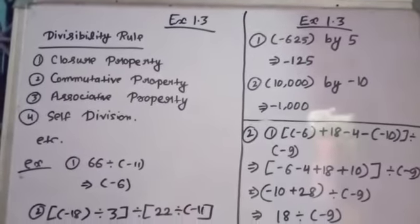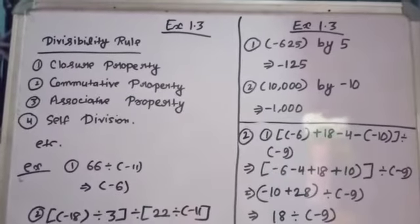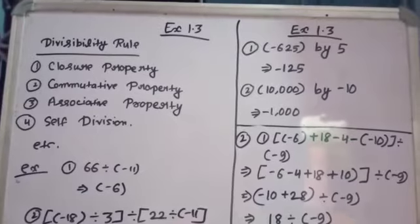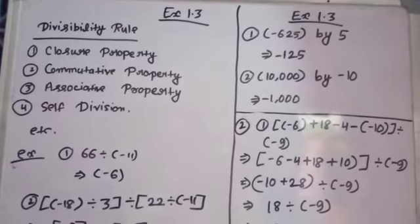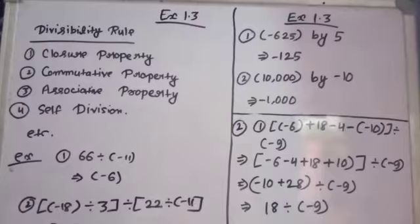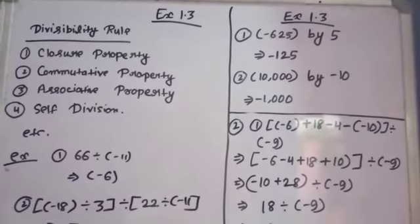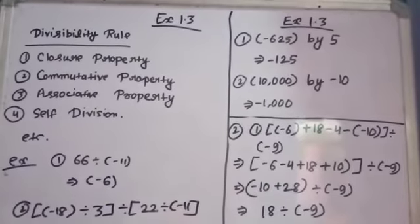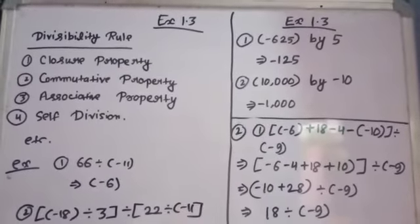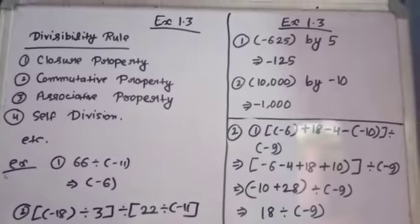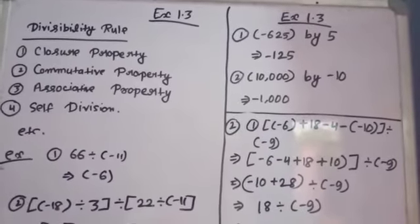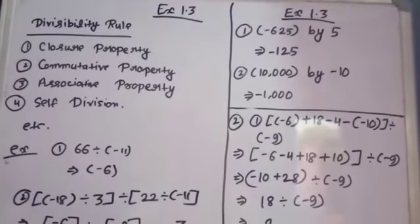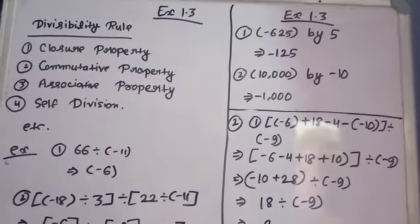Hello students, today I am going to teach you Exercise 1.3 of Class 7, that is divisibility rule. I have told you the rule of addition and multiplication and how to divide that you have to learn in this chapter. Here also you need to follow some properties as I told you earlier like closure property, commutative property, associative property.